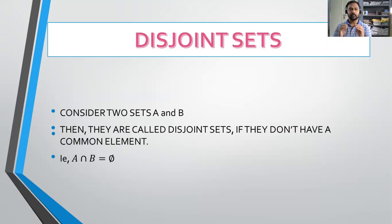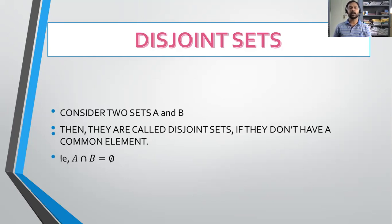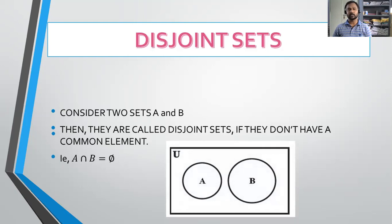Disjoint sets — the name very much implies 'no joint.' There should be no joint between the sets. Consider two sets A and B; they are called disjoint sets if they don't have a common element. That means A intersection B is the null set. Therefore, if A intersection B is a null set, we say the two sets are disjoint. Here is the Venn diagram for disjoint sets: the universal set contains A and B, which are not connected at all.